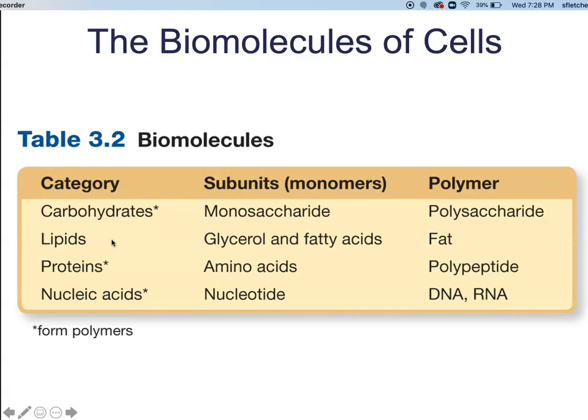Macromolecules contain much smaller subunits joined together. You can think of it like a train — a train is not a train unless all of those individual cars are strung together. These macromolecules usually consist of many repeating units. Each individual unit is known as a monomer. A molecule composed of many monomer units strung together is what's known as a polymer. Mono meaning one, poly meaning many — the collective of all those monomers strung together is the polymer.